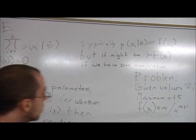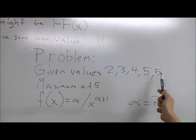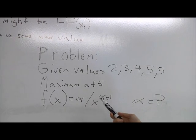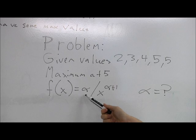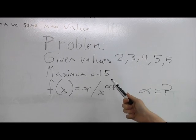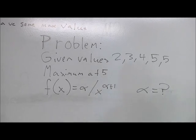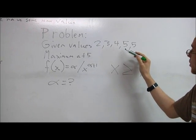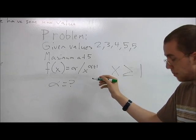So here's a problem. You're given the values 2, 3, 4, 5, 5, and 5. You have a maximum of 5. And you have the equation, the little f of x equals alpha divided by x to the theta plus 1. So what is alpha? So first to solve this, we'll need to take the integral of this in order to obtain capital F of x, because these are the max value.